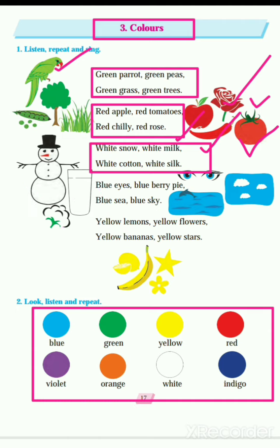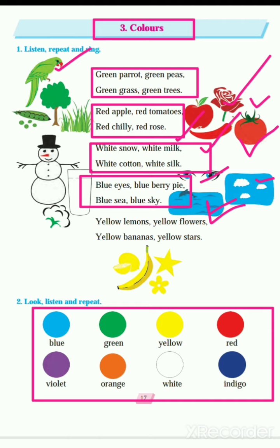Now we will see the next color: blue. Blue eyes, blueberry pie, blue sea and blue sky. Blue eyes — how are eyes blue? Then blueberry, which is a fruit. Then blue sea — the sea is blue colored — and blue sky. These are the different things given for the blue color.